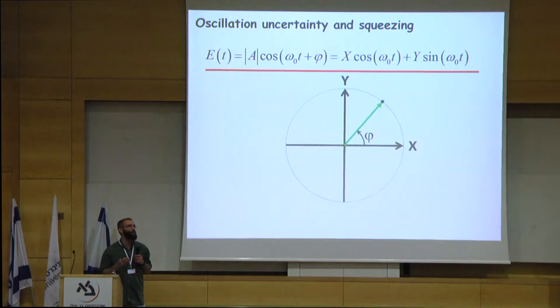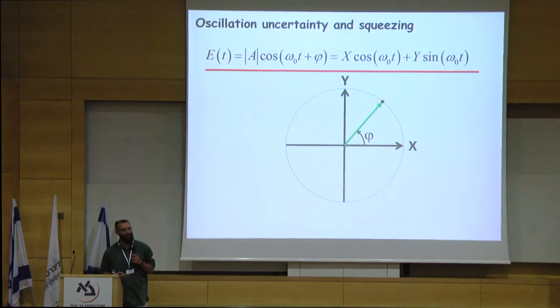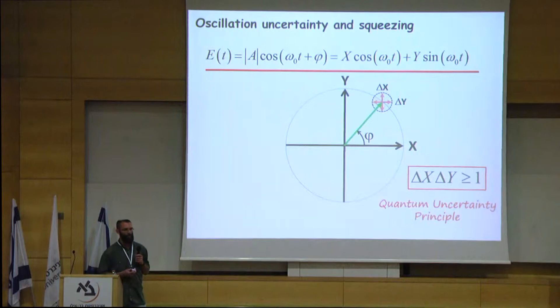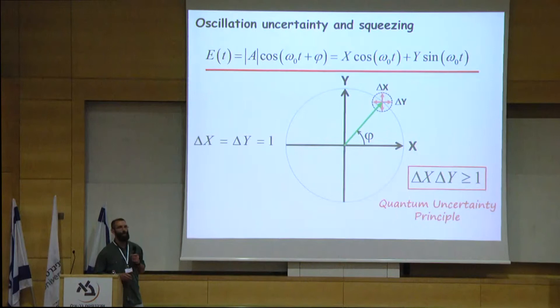However, the two quadratures obey a quantum uncertainty principle, so that we cannot obtain complete information regarding both quadratures simultaneously. We should replace the point with a circle of uncertainty. In the semi-classical coherent state, the two uncertainties are identical: delta x equals delta y. However, we can squeeze the uncertainty, reducing the uncertainty of one quadrature at the expense of increasing the uncertainty of the other.